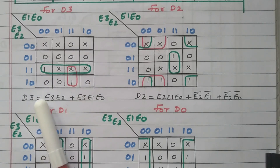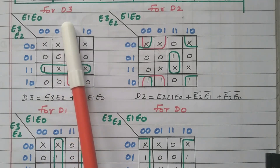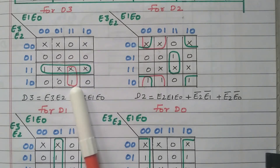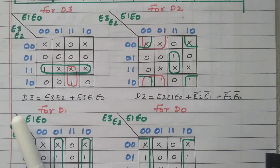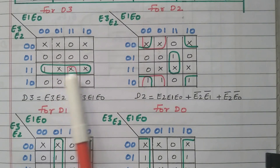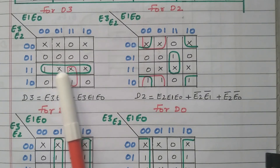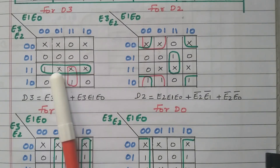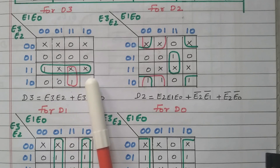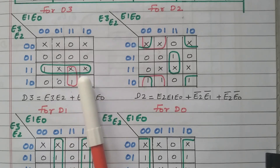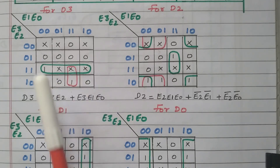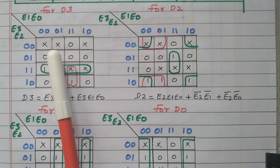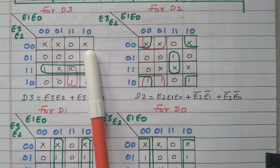Now we mark the ones from the truth table in the K-map. For D3, only 2 ones are available. The cross marks represent don't care conditions. The don't care conditions arise because XS3 code only uses values 3 to 12, so inputs 0, 1, and 2 are not used.